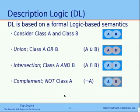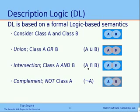Description logic is based on a formal logic-based semantic. Consider, for example, class A and B: you can define the union as all of the individuals that belong to class A or class B, while the intersection would be all of the individuals that belong to class A and class B. The complement of class A can be defined as all of the individuals that do not belong to class A.